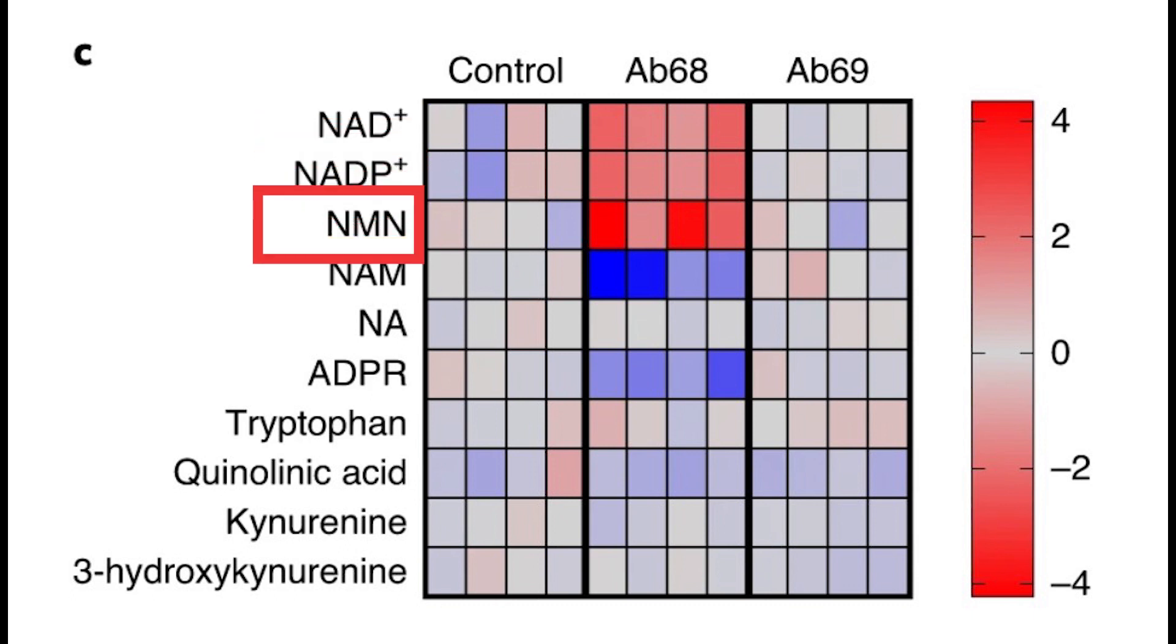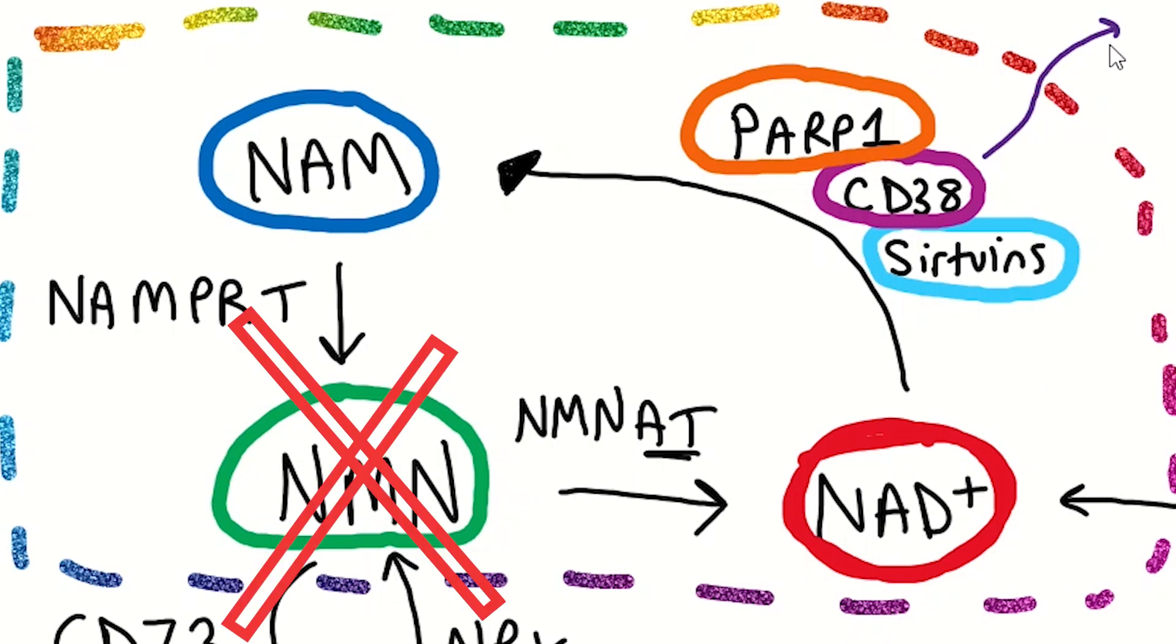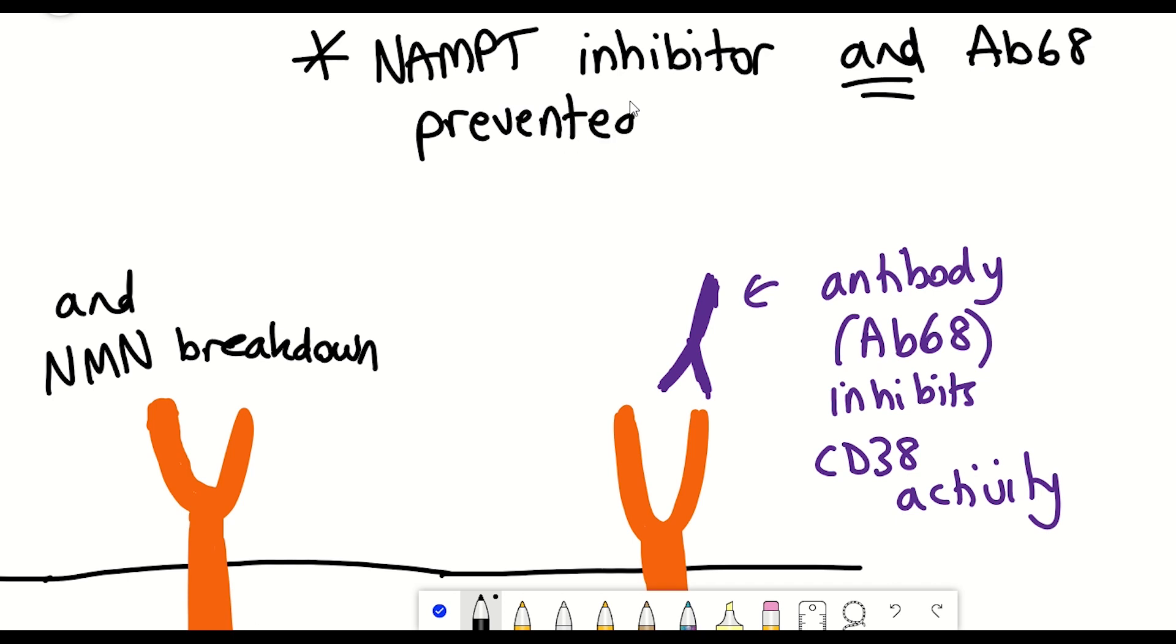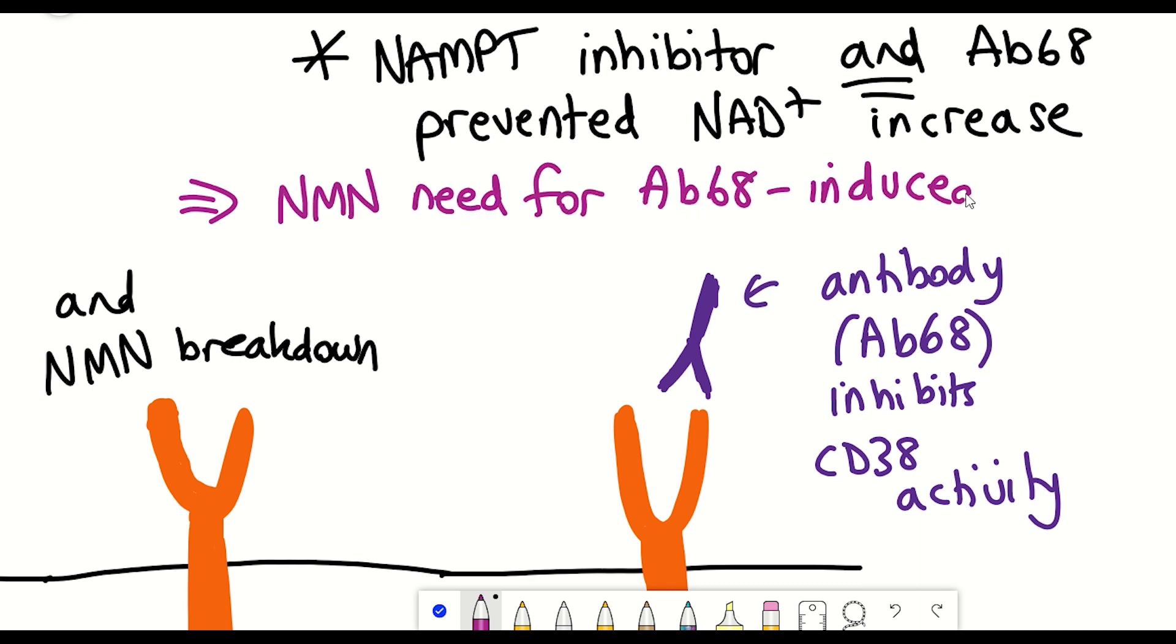What they then did was inhibit the production of NMN by blocking the enzyme NAMPT, which is the enzyme involved in the synthesis of NMN. What they could see was that this inhibition of NAMPT abrogated the boosting in levels of NMN and NAD plus caused by this antibody 68 in the white adipose tissue. Bottom line is that it shows NMN is required for the antibody 68 induced NAD plus boosting.